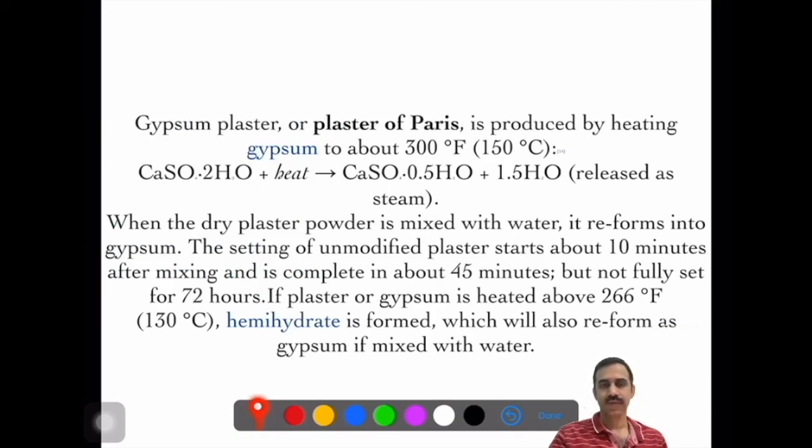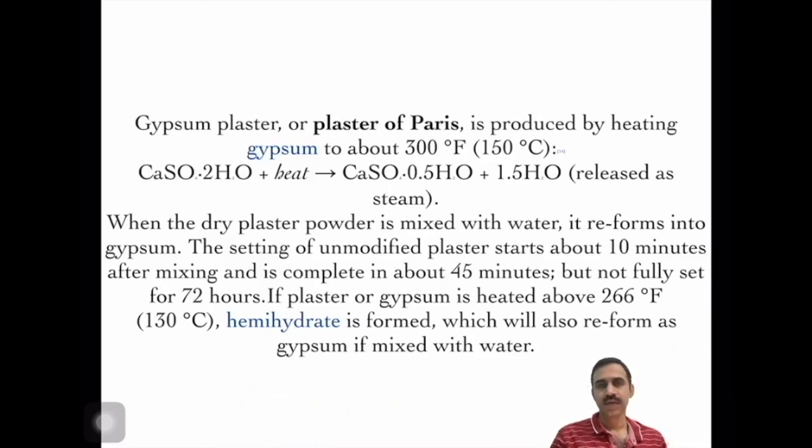A few words about plaster of Paris or gypsum plaster. It's produced by heating gypsum to about 300 degrees Fahrenheit. Calcium sulfate 2H2O, when heated, becomes calcium sulfate half H2O, and water is released as steam. When dry plaster powder is mixed with water, it reforms into gypsum. The setting of unmodified plaster starts about 10 minutes after mixing and is complete in about 45 minutes, but not fully set for 72 hours. If plaster or gypsum is heated above 266 degrees Fahrenheit, hemihydrate is formed, which also reforms as gypsum when mixed with water. I included plaster of Paris in this discussion because it is sometimes confused with bone cement.